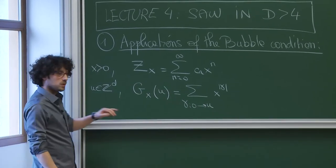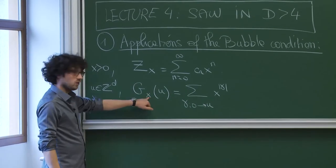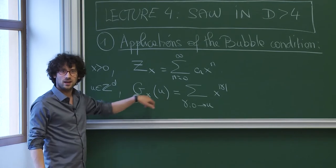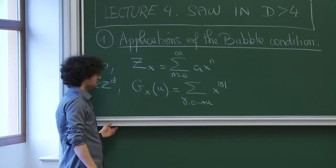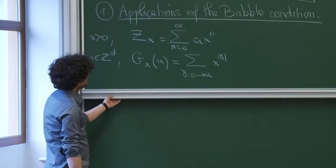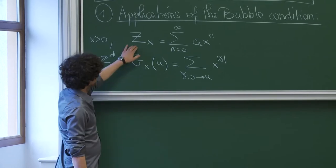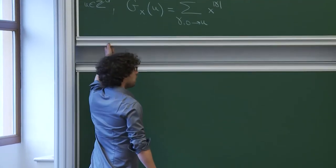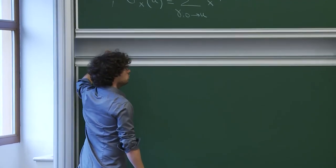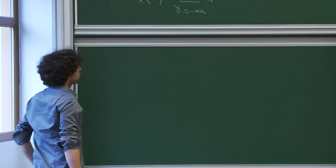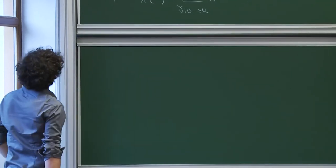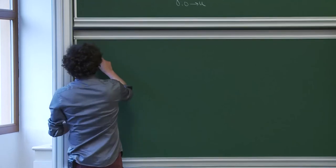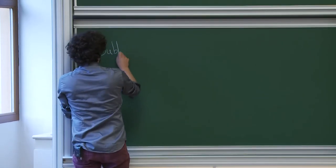I will try not to be confused between x, which is a parameter, and u, which is a vertex. Our goal is to derive information on the self-avoiding walk when you make the following assumption: the bubble condition.